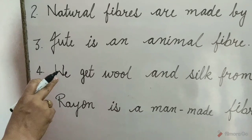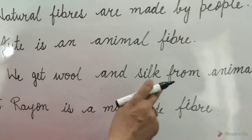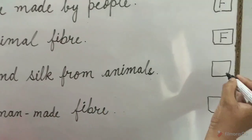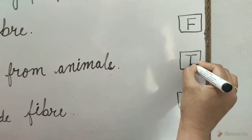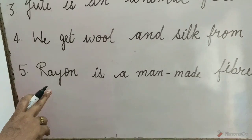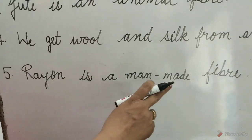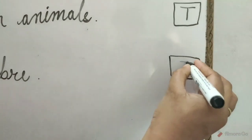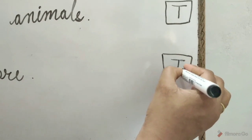4. We get wool and silk from animals. This is true, so write T in the box. 5. Rayon is a man-made fiber. It is true, so write T in the box.